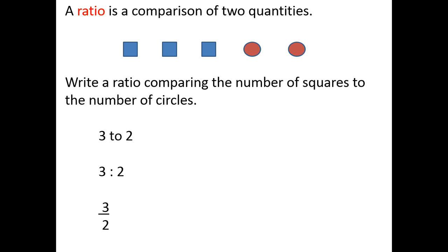We can also express a ratio as a fraction. In this case, even though the fraction looks like 3 halves, if we're calling this a ratio, we would still say 3 to 2. For our purposes, we're going to be writing our ratios as fractions, because we'll be doing some mathematical operations with them.